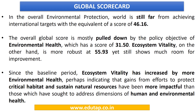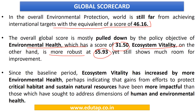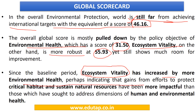The two policy objectives — environmental health and ecosystem vitality — constitute the overall Environmental Performance Index. Environmental health has a score of 31.50 and ecosystem vitality has 55.93, with an overall environmental protection score of 46.16, which is still far from achieving international targets. Compared to the baseline period, ecosystem vitality has increased more than environmental health, indicating that gains from efforts to protect ecosystem vitality are more impactful.